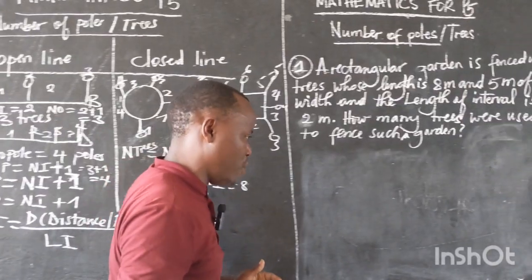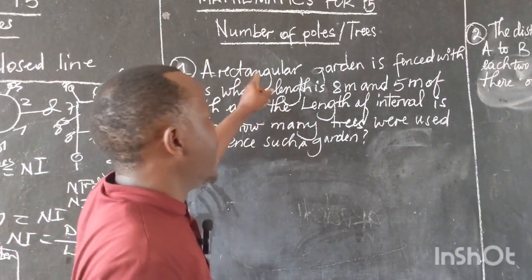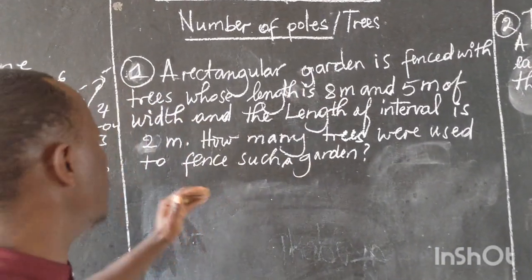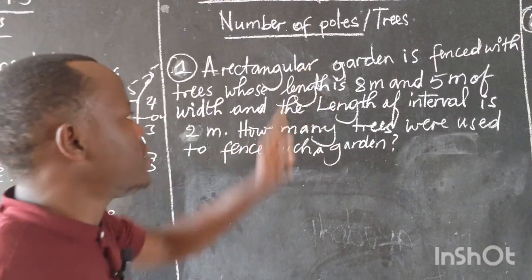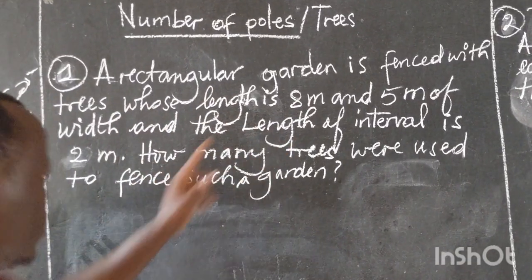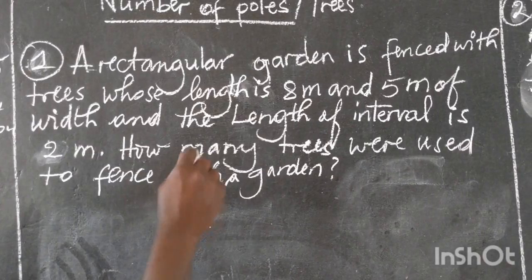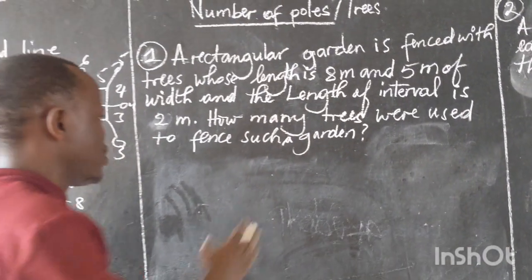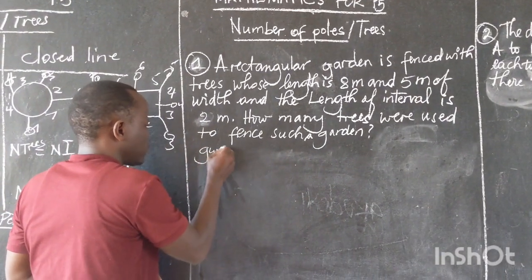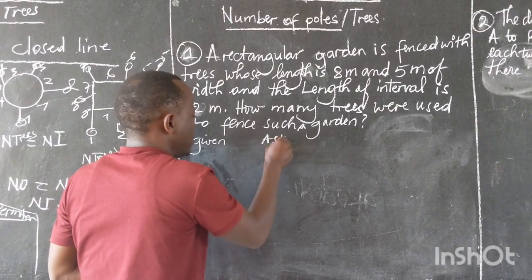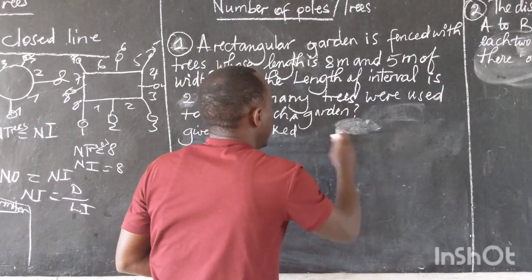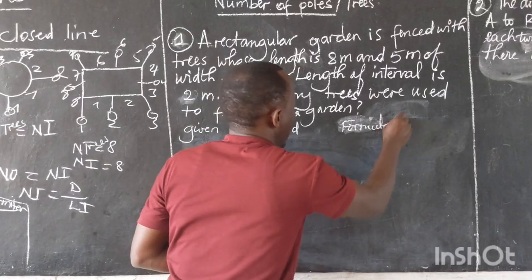Let's come to our example. A rectangular garden is fenced with trees whose length is eight meters and width is five meters. The length of the interval is two meters. How many trees were used to fence such a garden? We are going to start by identifying what is given.